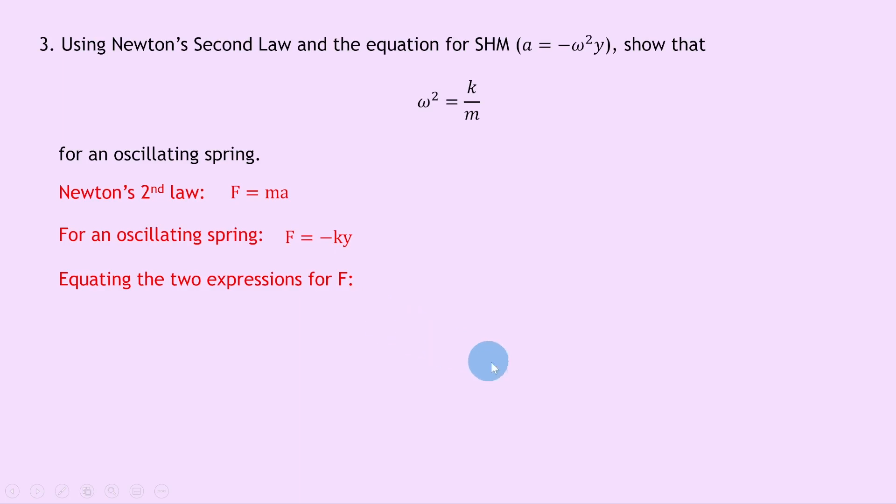So if we equate our two expressions for the force F, then we end up with ma is equal to minus ky. And so rearranging this for a, we can divide both sides by m to get a equals minus k over m y.